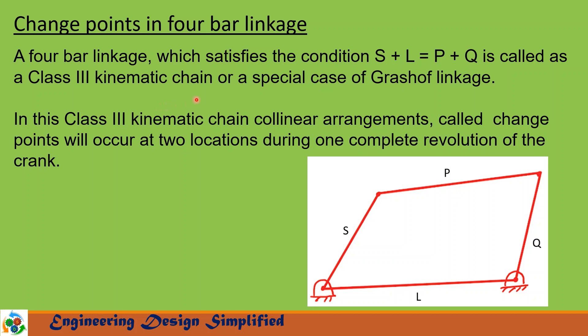A four bar linkage which satisfies the condition s + l = p + q is called a Class 3 kinematic chain or a special case of Grashof linkage. Here s is the length of the shortest link, l is the length of the longest link, and p and q are lengths of the other two links.